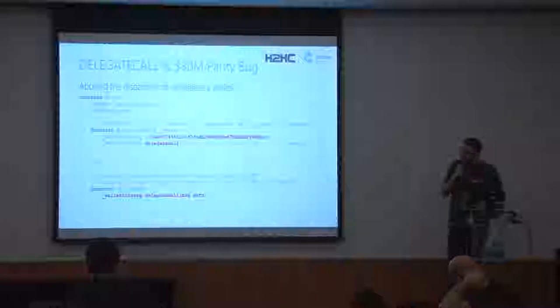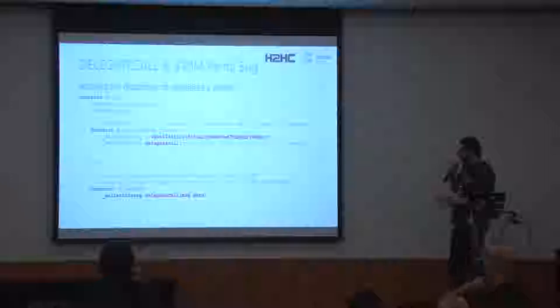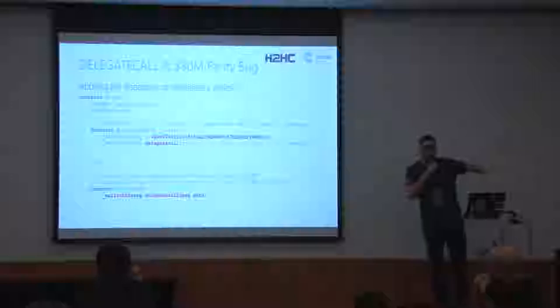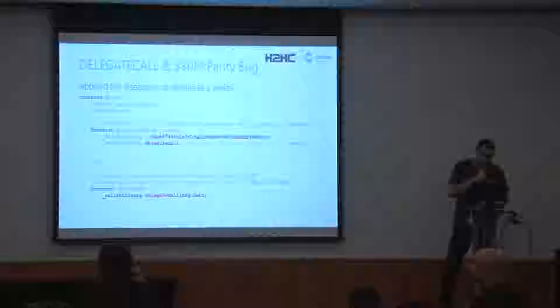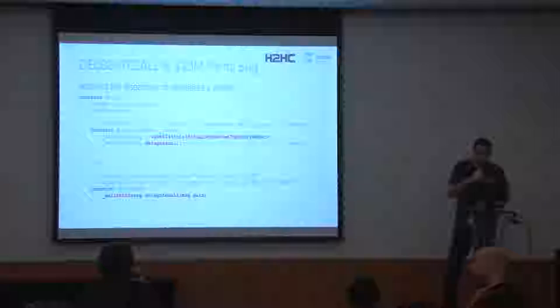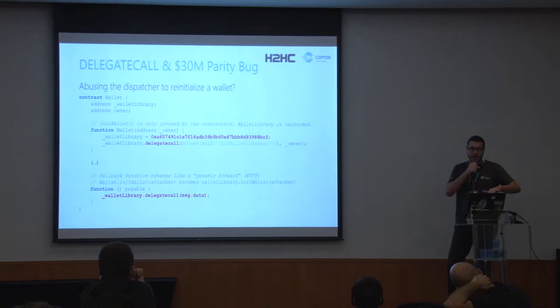This is a simplified view of the actual Parity bug. In the actual constructor of the function, the address of the actual third-party library that was used is hardcoded — that's what you see in red — an address encoded in 160 bits. Then the interesting part is a very dirty way of calling a function from that library: it's computing the hash of the actual init wallet function and then doing a delegate call which is going to call the third-party library.